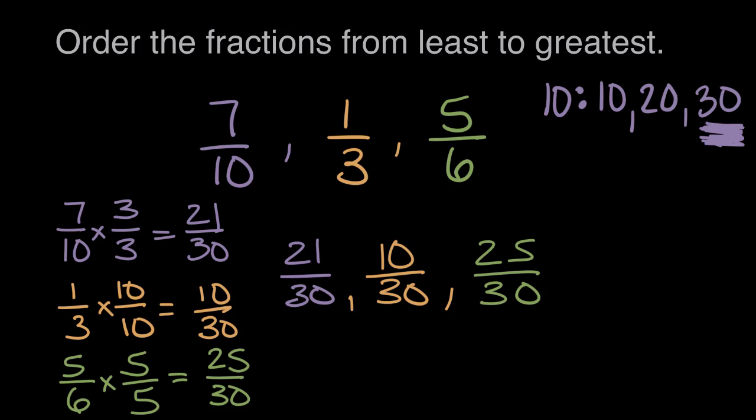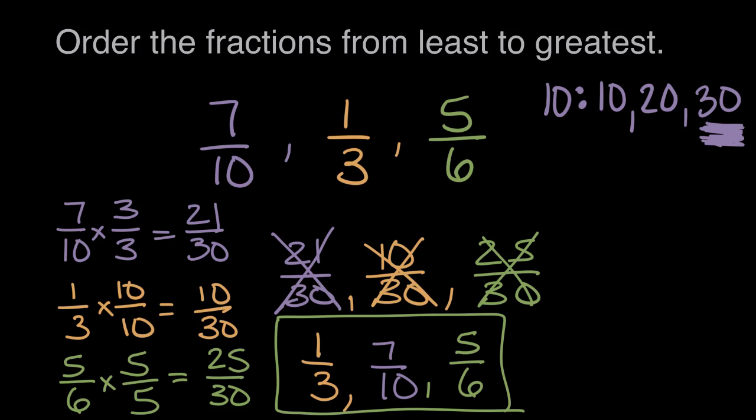So we can list these now from least to greatest. The least, the smallest, is ten-thirtieths, which again, remember, is equal to one-third. So we can put one-third is least, and we can cross that off. Next, it's either twenty-one out of thirty or twenty-five. Twenty-one is less, and that represented seven-tenths. So we can say seven-tenths, because twenty-one thirtieths equals seven-tenths. And finally, that leaves us with twenty-five thirtieths, which is equivalent to five-sixths. So from least to greatest, our fractions are one-third, seven-tenths, and then five-sixths.